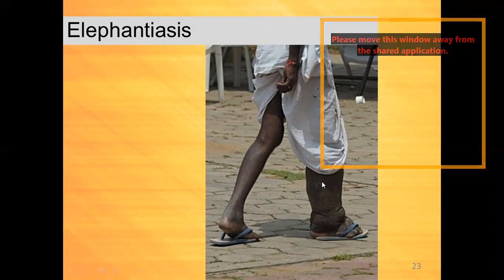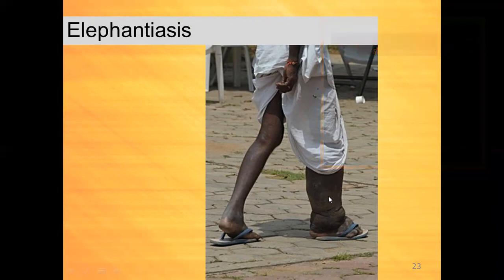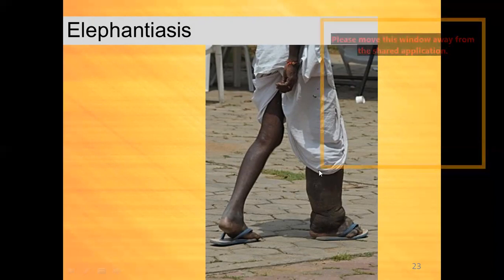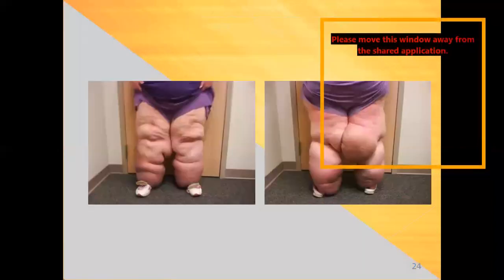Especially, if there is any obstruction of the lymphatics, it leads to elephantiasis. You can observe the leg of a person which is abnormal — swollen like an elephant. This is elephantiasis. Both legs can be affected with elephantiasis.